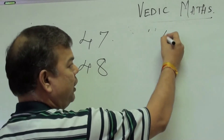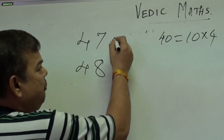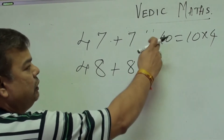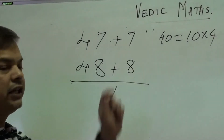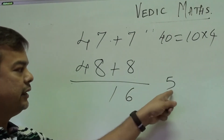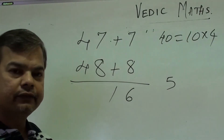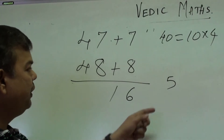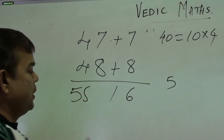Now let us verify using base 40. Base 40 = 10 × 4, multiplier is 4. With base 40: 47 becomes +7 and 48 becomes +8. Multiply 7 × 8 = 56: write 6, carry 5, since 40 has one zero. Cross addition: 47 + 8 = 55.